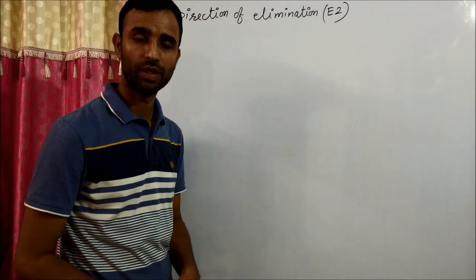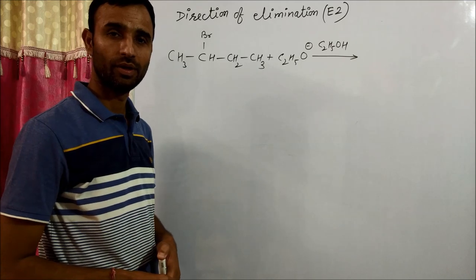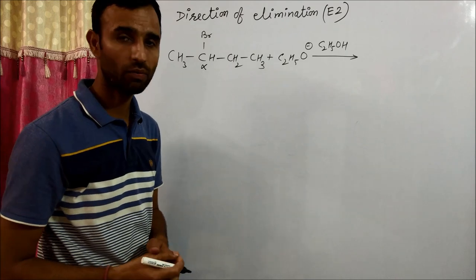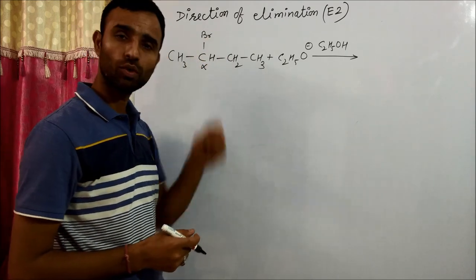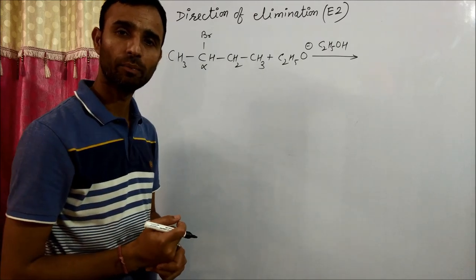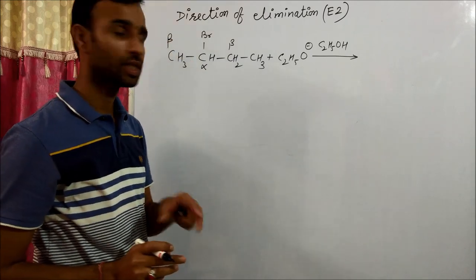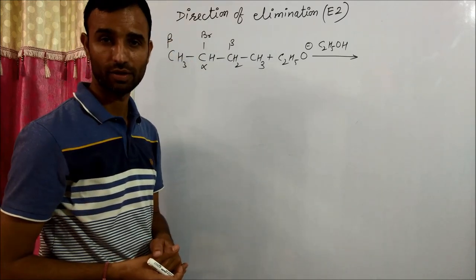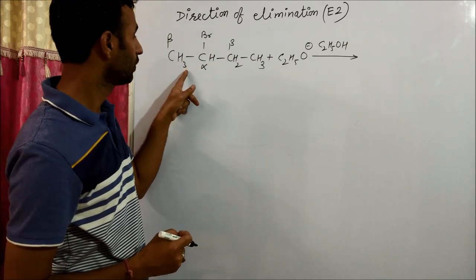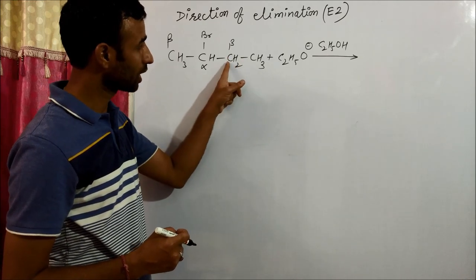Direction of elimination. Take an example. Now look at it. We have bromine attached to alpha carbon. Obviously, carbon attached to bromine is taken as alpha, and next to it is known as beta. So we say we have two beta hydrogens, and both are not the same.